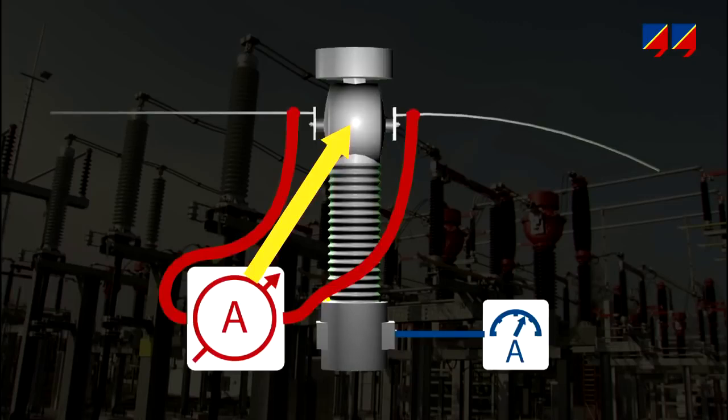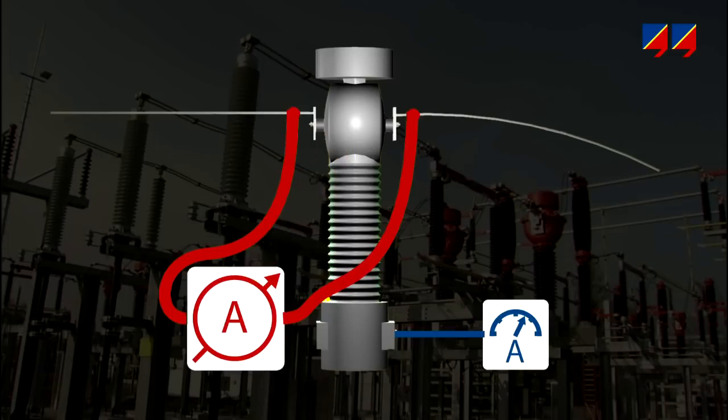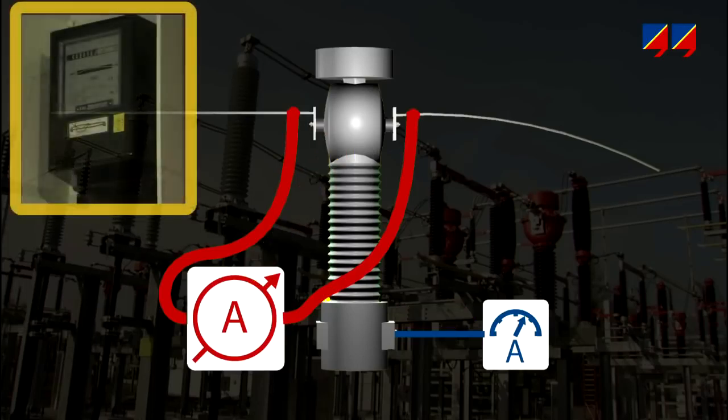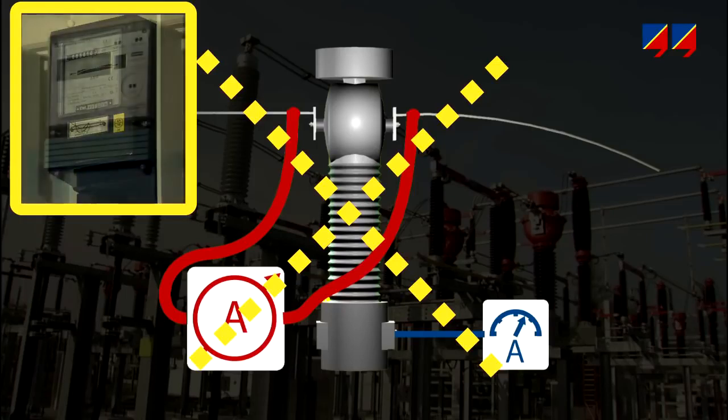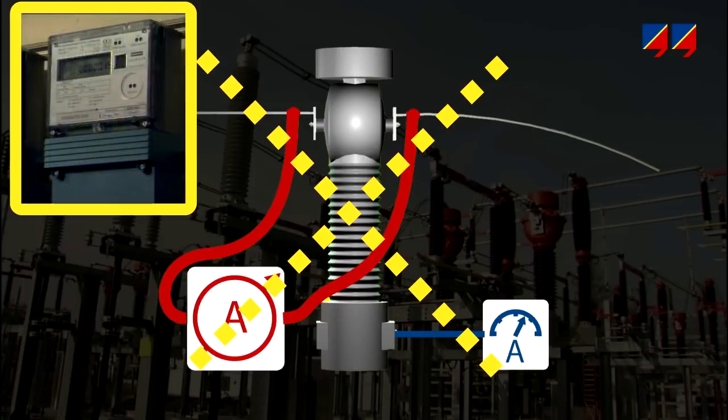Injecting current on the primary side using a portable high-current source and measuring secondary current allows the ratio and wiring of a particular core and tap to be checked. This method is insufficient, particularly for verifying metering CTs, because of limitations in the current amplitude, limited accuracy, and the inability to consider different burden values.